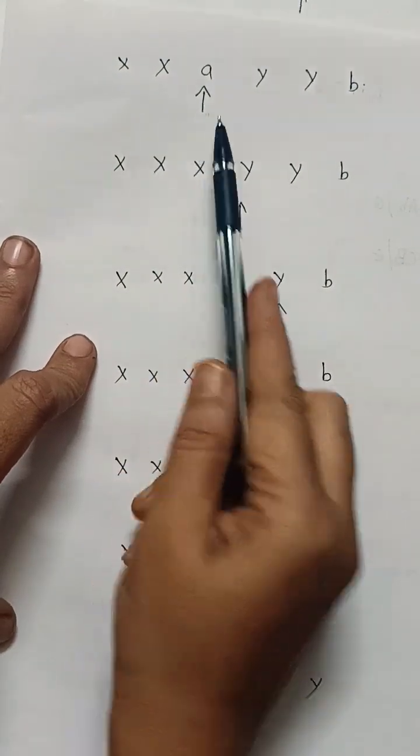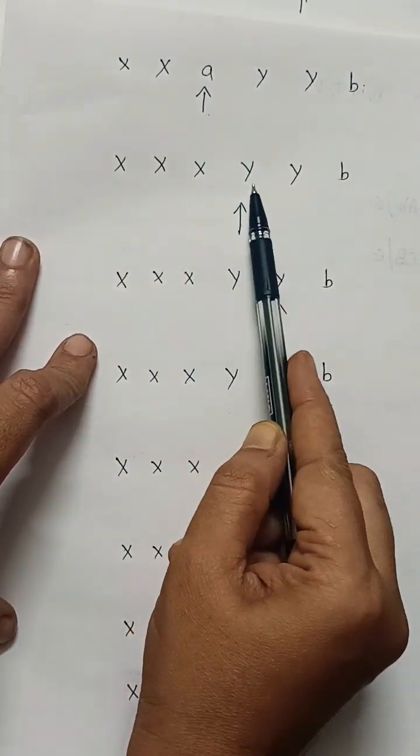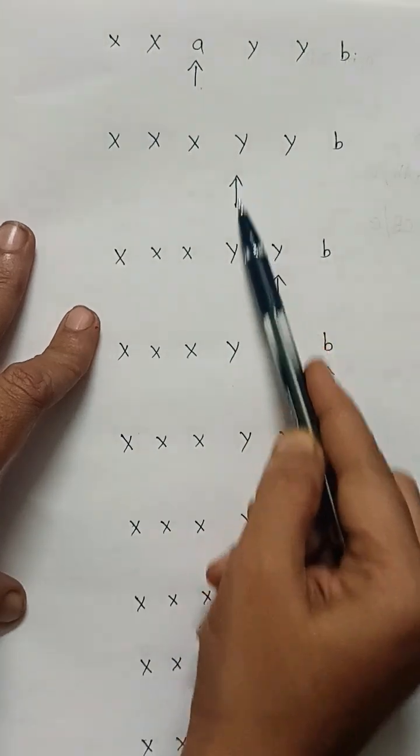So, replace the third A with X and move to right. Y means just write it as it is. Replace Y with Y.